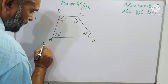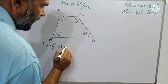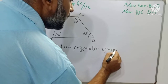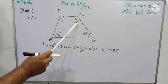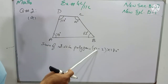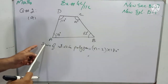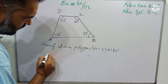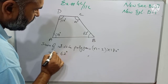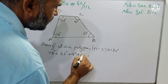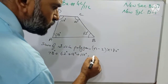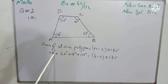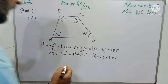Sum of interior angles in a polygon equals (n minus 2) into 180 degrees. On the left side we write all the interior angles: 78 plus 62 plus a plus 110 degrees equals (4 minus 2) into 180 degrees. Summing the known angles: 8 plus 2 is 10, plus 0 is 10, carry 1; 7 plus 1 carry 8, 8 plus 6 is 14, plus 1 is 15, carry 1; 1 plus 1 plus 1 is... so 250 plus a degrees equals 2 times 180 degrees.